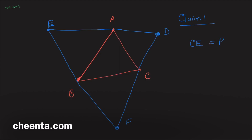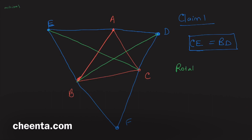The first claim is that CE is equal to BD. I'll ask you to pause the video and give it a try on your own — it's actually quite easy. You can do it using normal geometry, but we will have a little fun and do it using rotation.